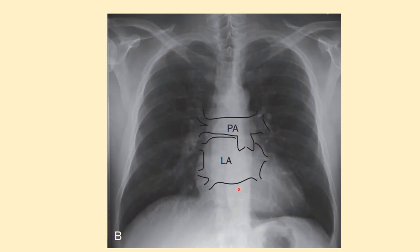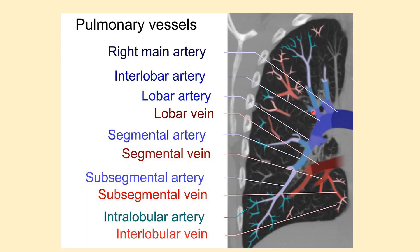I have removed all other structures so that we get a better understanding. This is the main pulmonary trunk which divides into the right main pulmonary artery and left main pulmonary artery. The right main pulmonary artery divides into interlobar artery, then lobar artery, segmental artery, subsegmental artery, followed by intralobular artery. This anatomy is important as any obstruction here causes a dilatation of the main pulmonary artery, followed by a cutoff sign or decreased blood flow through the peripheries distally.